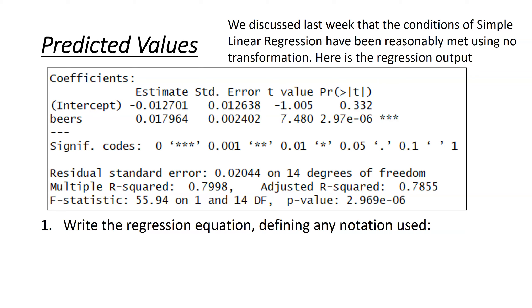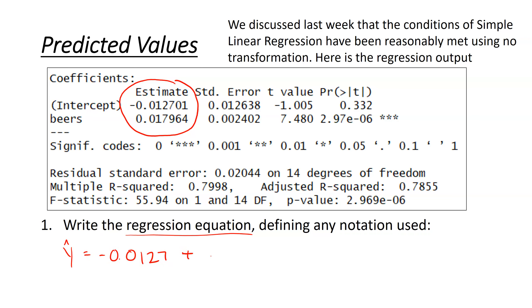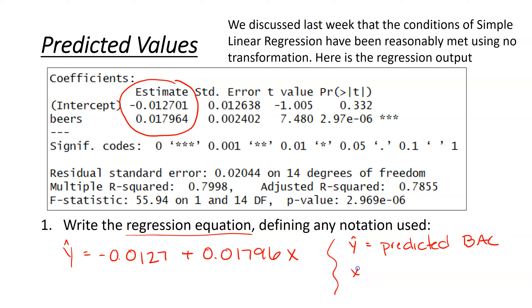We've got a real straight-line relationship, a real linear trend. The residuals seem fairly constant, and in a normal probability plot they seem pretty normal. So we'll go ahead and move forward under the assumption that the conditions are reasonably met — no need for any transformations. Once you decide the conditions have been met and you've decided on your model, you get the output. When asked to write the regression equation, you need two numbers from the table: the intercept and the slope.